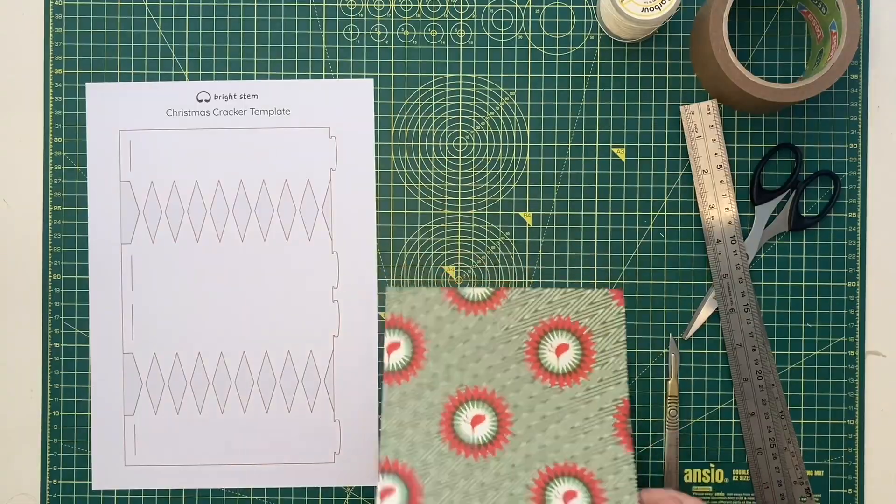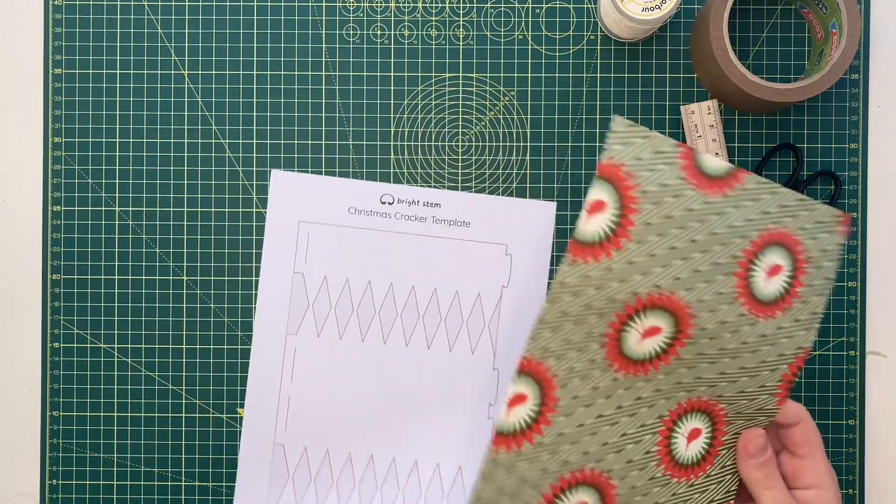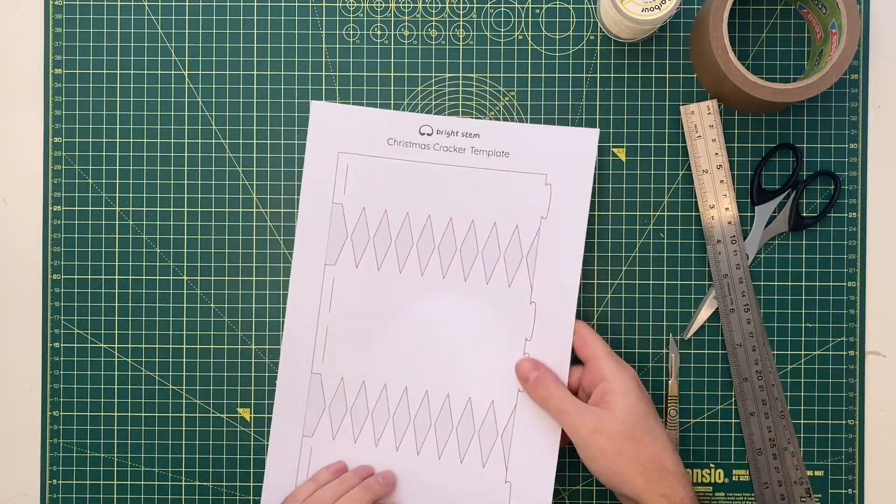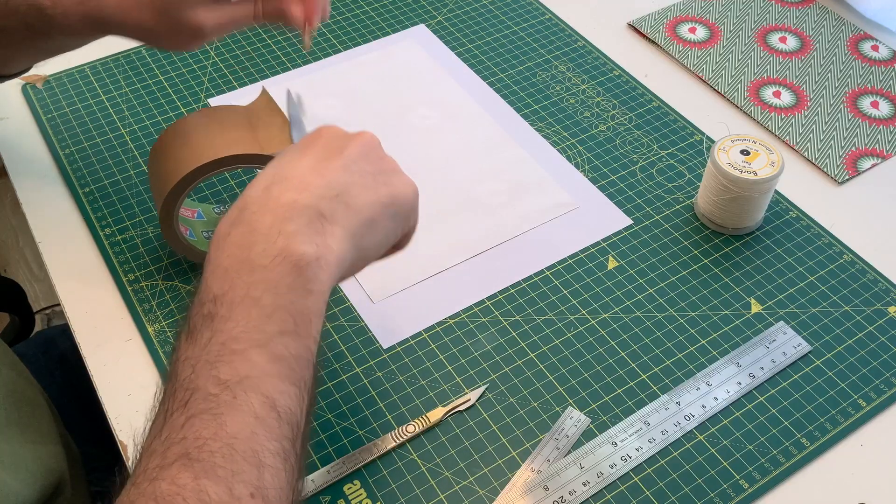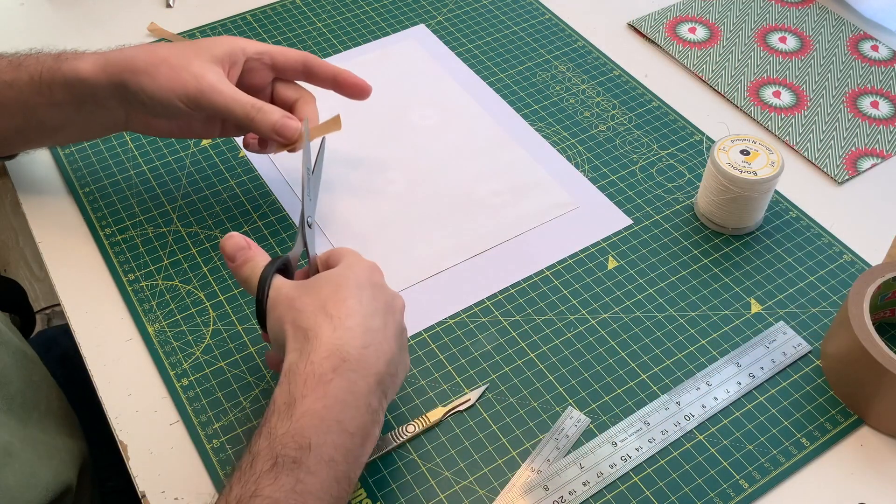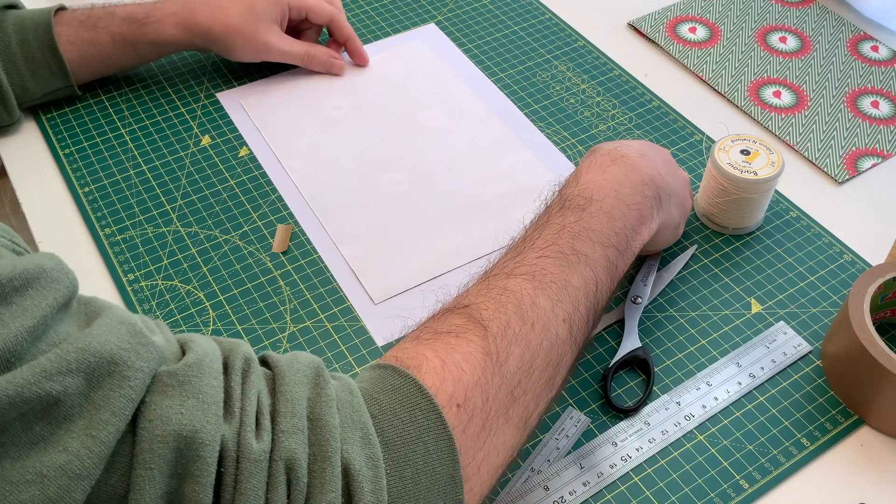On a flat surface, take the Christmas cracker template and place the wrapping paper that you just cut out underneath it, and then turn it over and stick brown paper tape down on each corner.